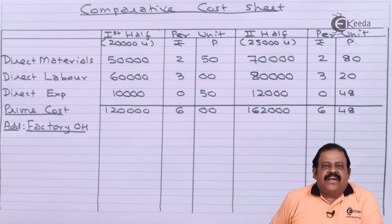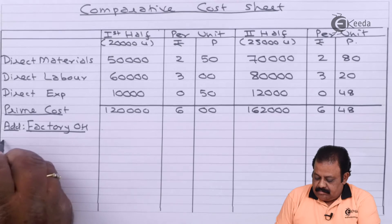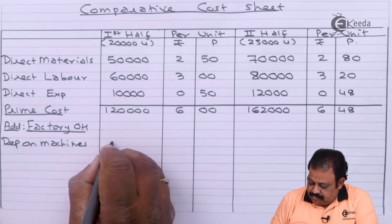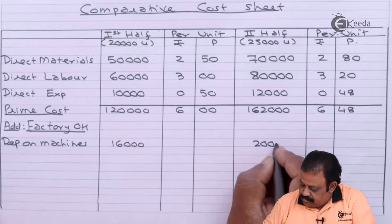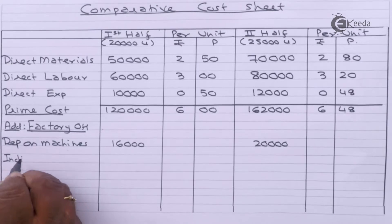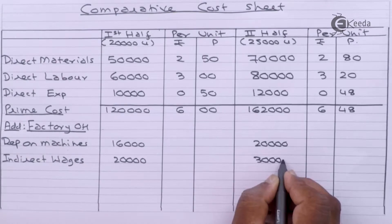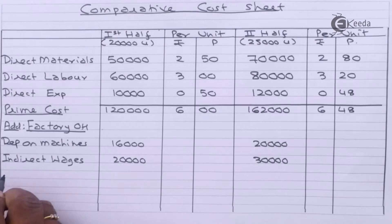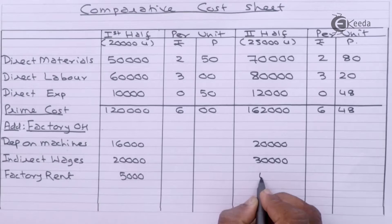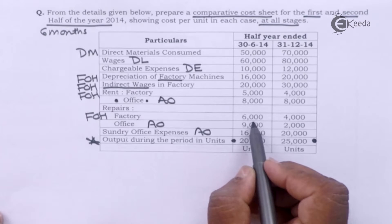Now adding factory overheads. Depreciation on factory machines: first half ₹16,000, second half ₹20,000. Indirect wages in factory: first half ₹20,000, second half ₹30,000. Factory rent: first half ₹5,000, second half ₹4,000. Repairs of factory: first half ₹6,000, second half ₹4,000.